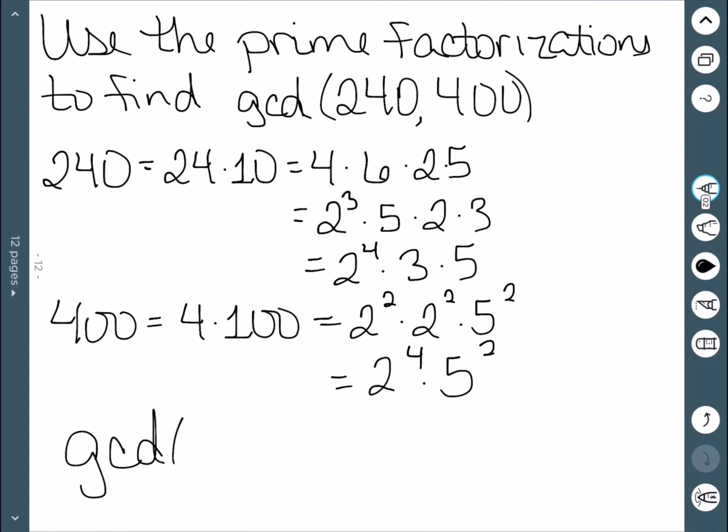Now, if I want to use this to find the GCD, essentially what I'm looking is what they have in common. They have a 2 to the fourth in common and a 5 in common. So therefore, my GCD is 2 to the fourth times 5, which is 80. So we can use the factorizations to find the GCD. We just need to first find the prime factorizations and see what they have in common.